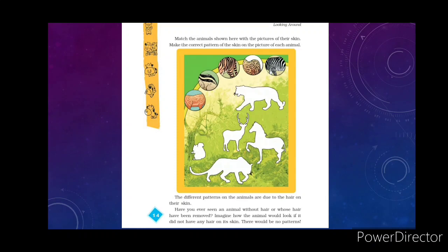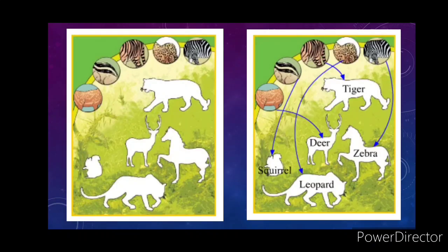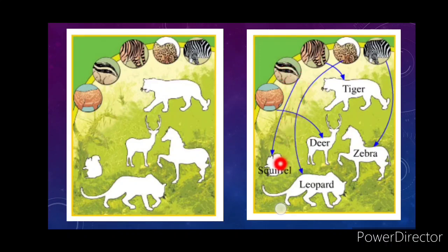Here is the solution. The first pattern — stripes of black over yellow — is the tiger's pattern. The next pattern belongs to the zebra. The dotted pattern, with small black dots on the body, belongs to the leopard. The squirrel has a stripe at its back — that pattern of hair is the squirrel's. The last one, with white dots on brown and yellow color, is the deer. In this way, we can recognize animals by the pattern of hair on their skin.